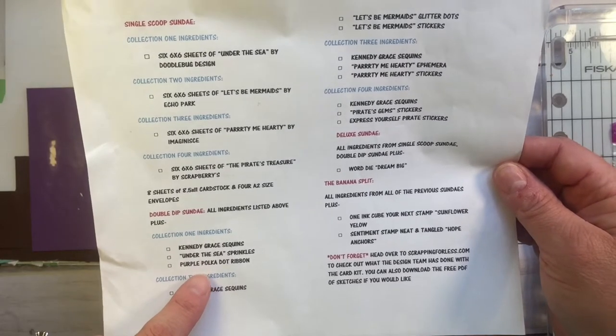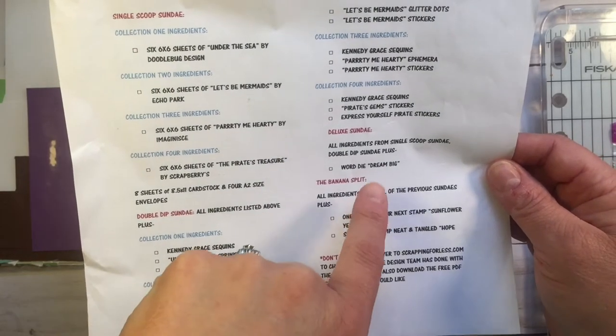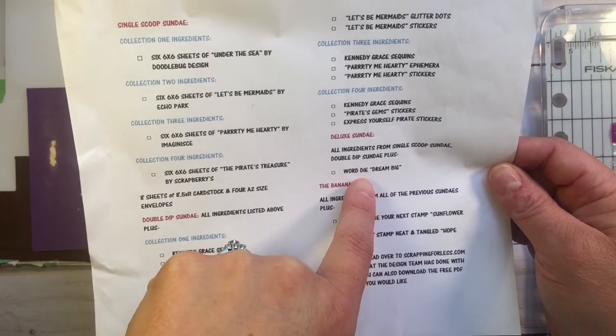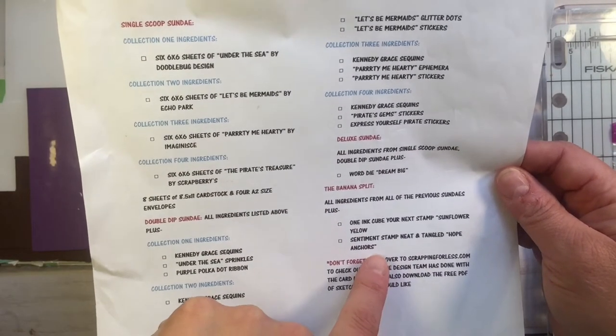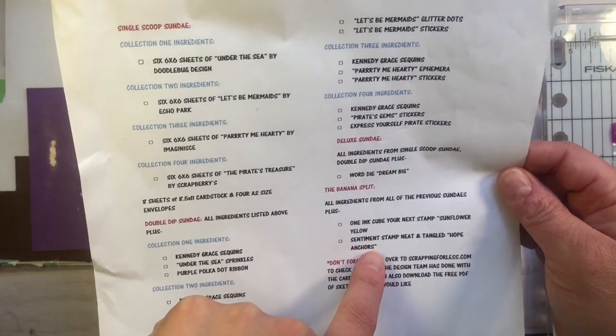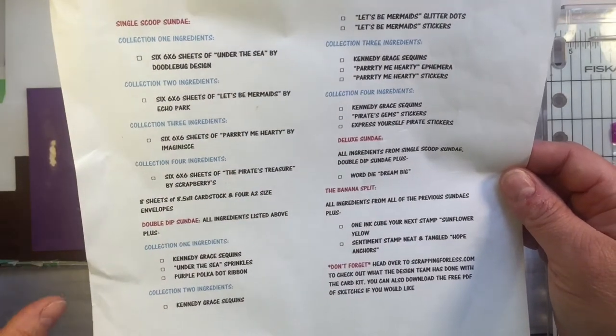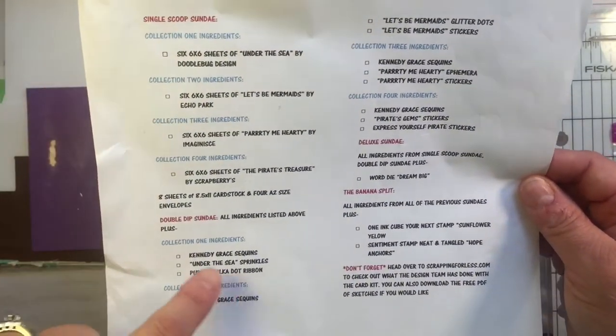The deluxe is a die, and I'm going to try to avoid dies because not everybody has dies or a die-cutting machine. The banana split is just adding an ink pad and another stamp, so I'm not going to use those.